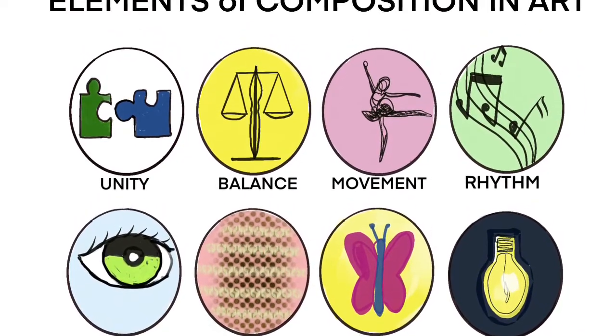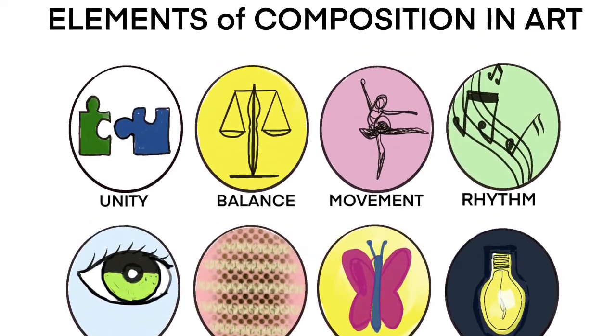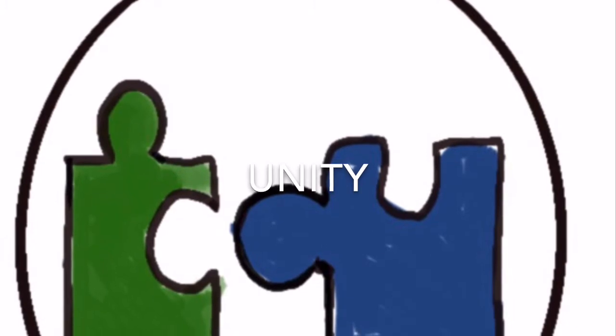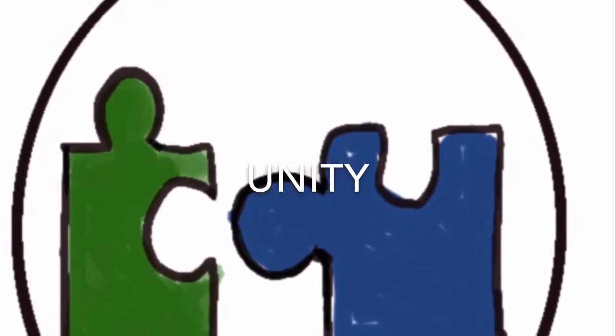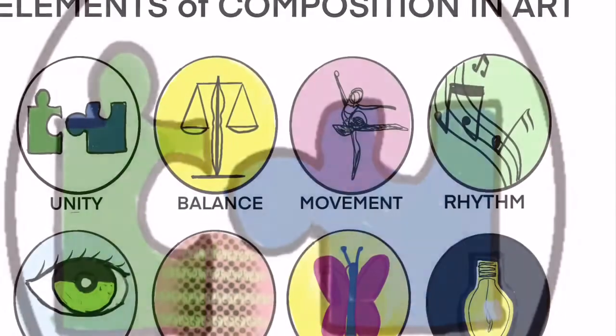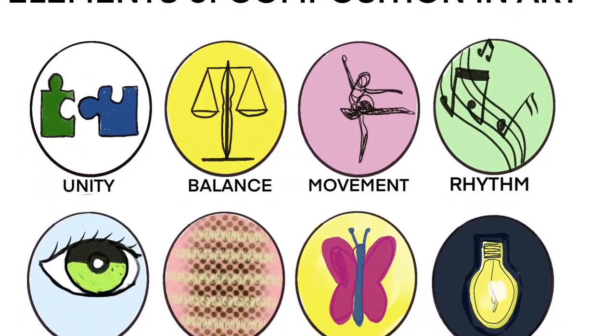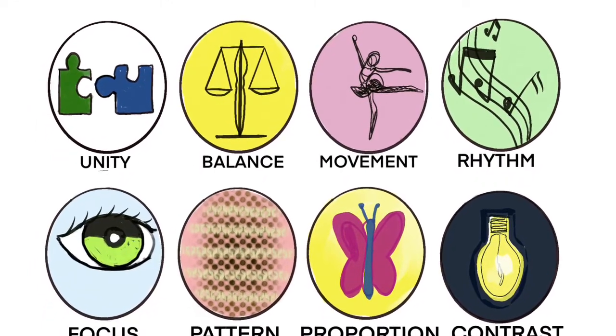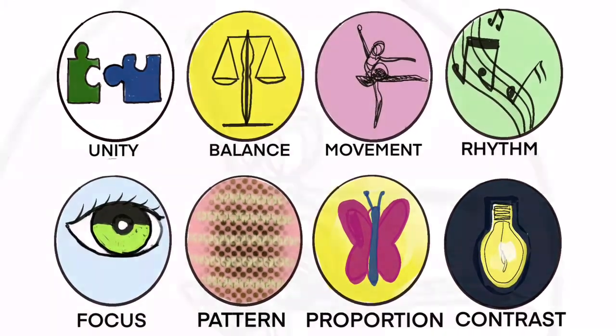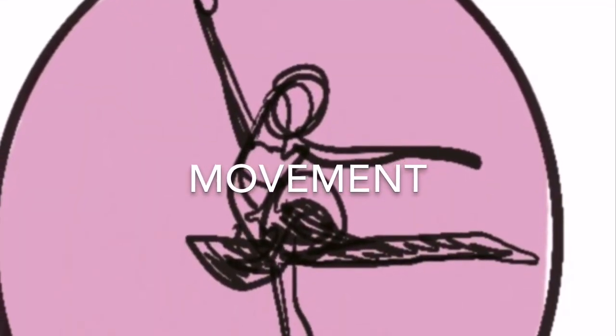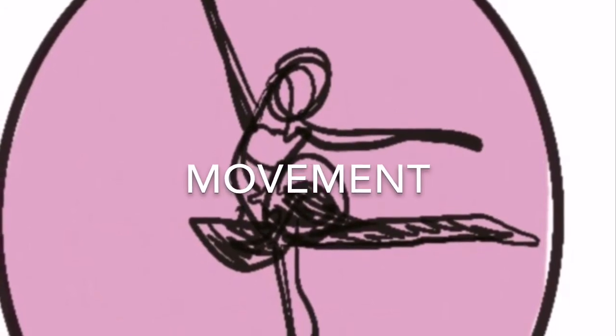They help give structure to the layout of the painting and the way the subject is presented. Number one: unity. Do all the parts of the composition feel as if they belong together, or does something feel stuck on or awkwardly out of place? Then there's balance—the sense that the painting feels right and not heavier on one side. A painting that is not balanced creates a sense of unease. Movement: there are many ways to give a sense of movement in a painting, such as the arrangement of objects, the position of figures, the flow of a river.